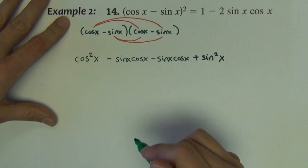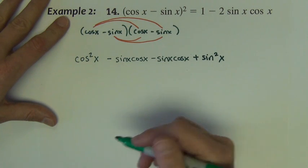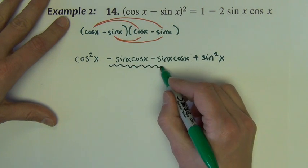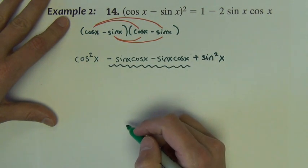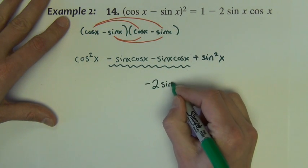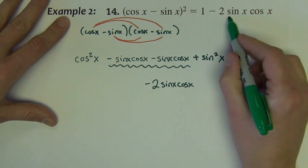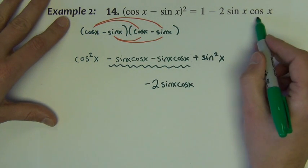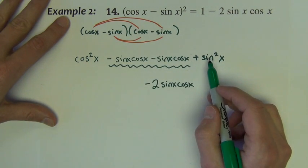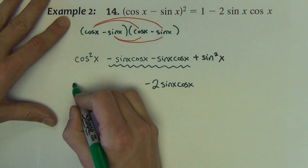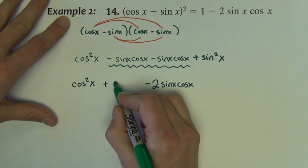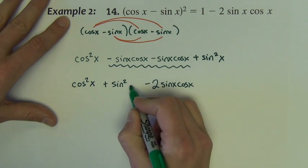What I'm going to do next, just so we can see it better, is I'm going to combine some like terms and do a little bit of regrouping. These two terms are like terms. They can add to be negative 2 sine x cosine x. You can see kind of where we're going with part of this answer. We also have these two terms. I've got cosine squared x plus sine squared x.